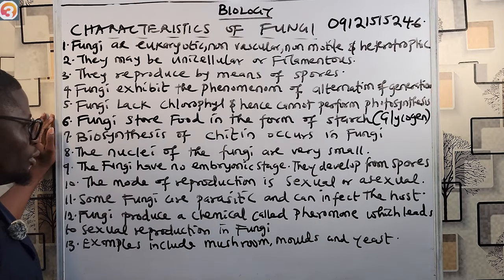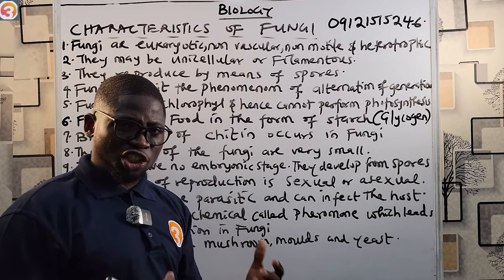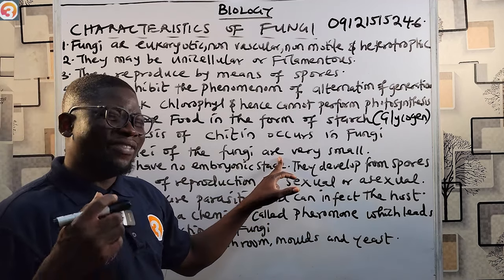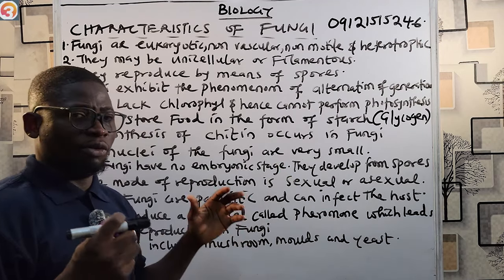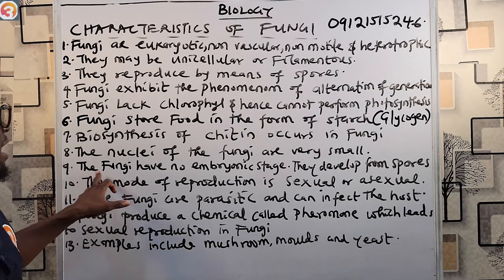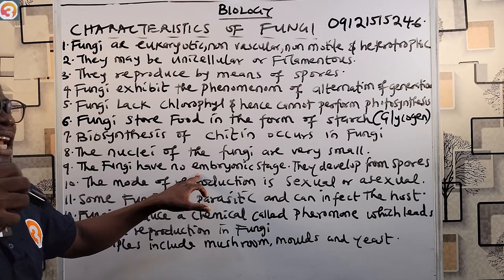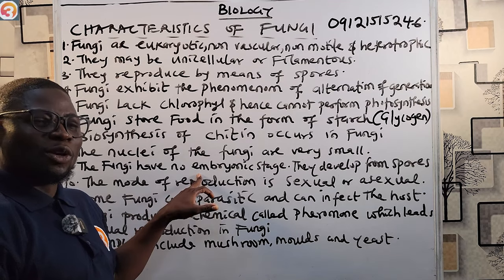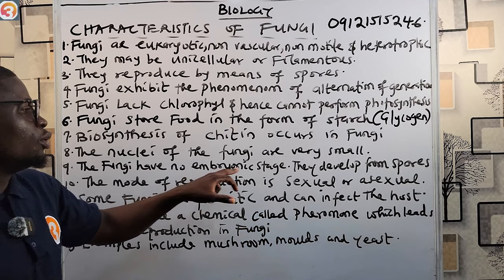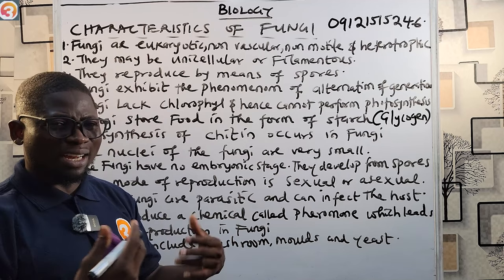Number ten: biosynthesis of chitin occurs in fungi — they have chitin. Number eleven: the nuclei of the fungi are very small. Number twelve: fungi have no embryonic stage, as we said earlier. There is no development of an embryo in fungi. They develop from spores — they release those spores to the environment to go and thrive.